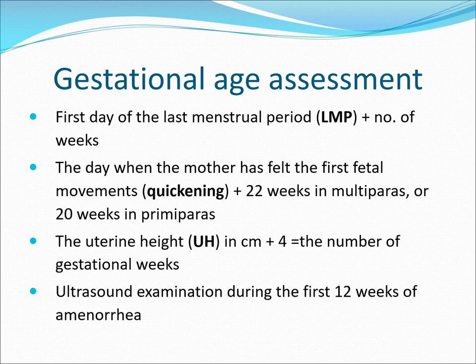To assess gestational age: first, use the first day of your last menstrual period plus the number of weeks. Second, use the days when the mother has felt the first fetal movements plus 22 weeks in multiparas or 20 weeks in primiparas. Third, the uterine height plus 4 equals the number of gestational weeks. Fourth, ultrasound examination during the first 12 weeks of amenorrhea. Methods 2 and 3 are especially important for patients who do not know their last menstrual period. Thank you for listening to Diagnosis of Pregnancy. Please subscribe to my channel for more lectures on obstetrics and gynecology.